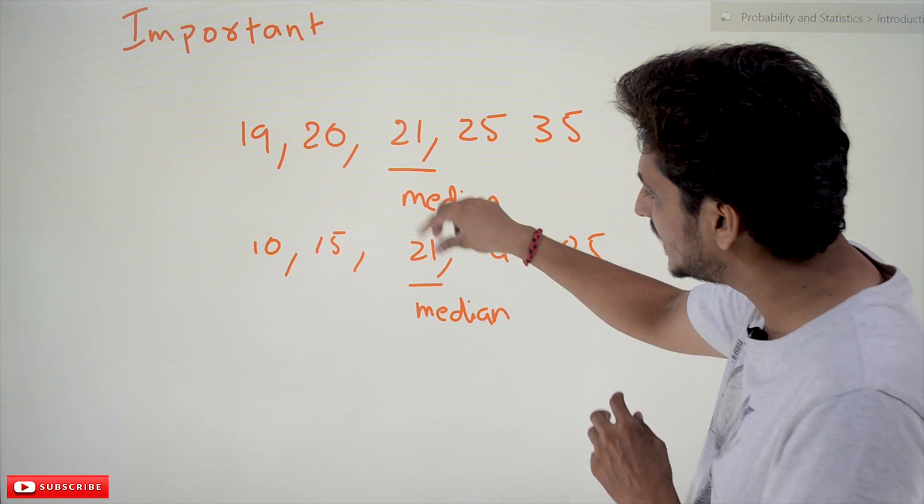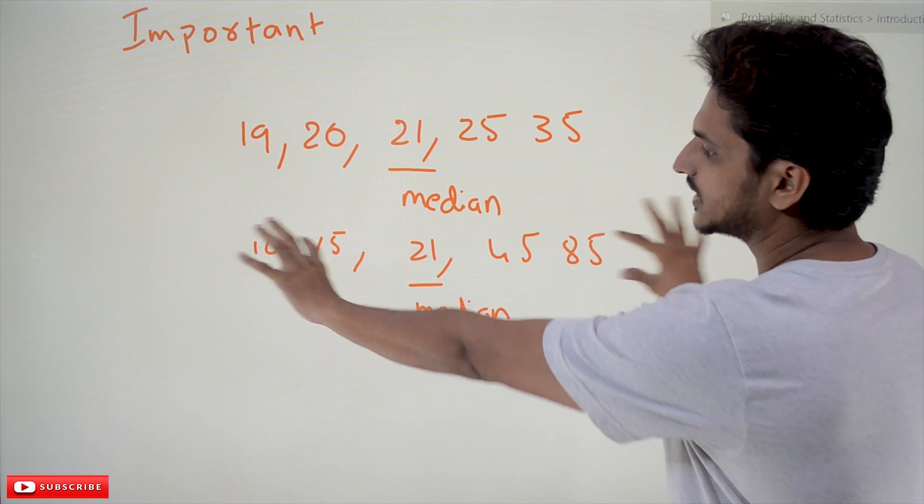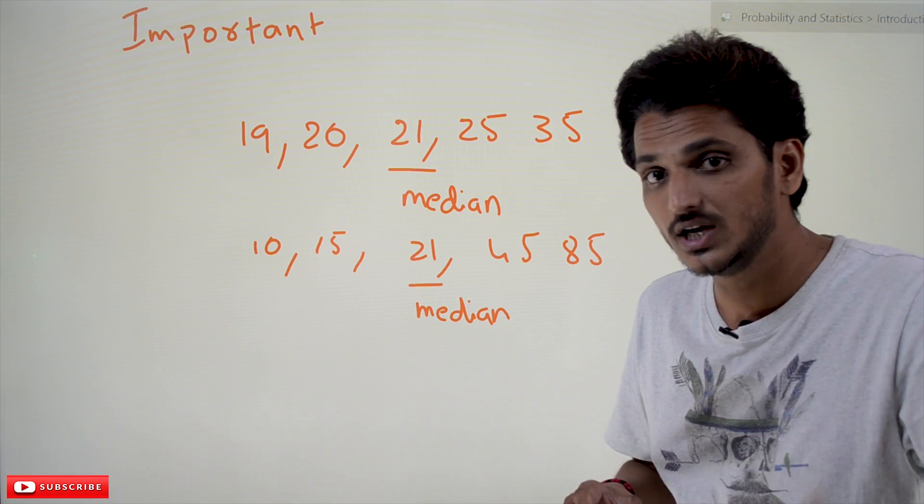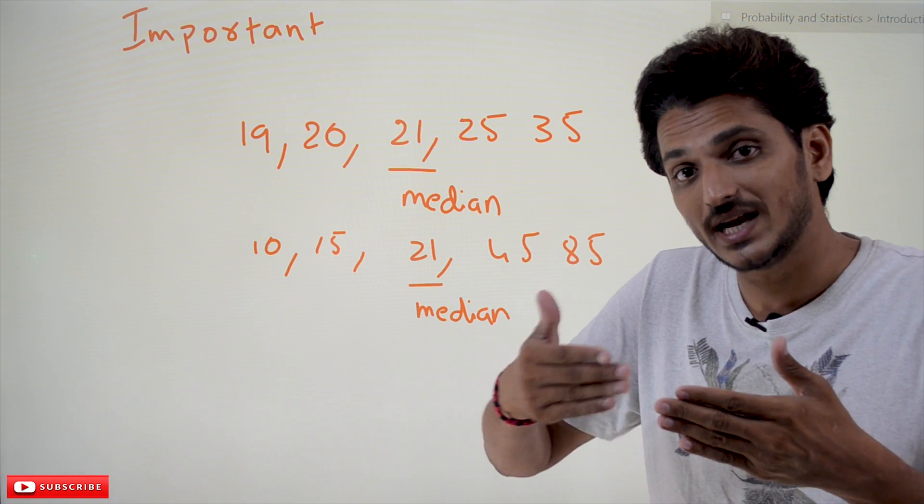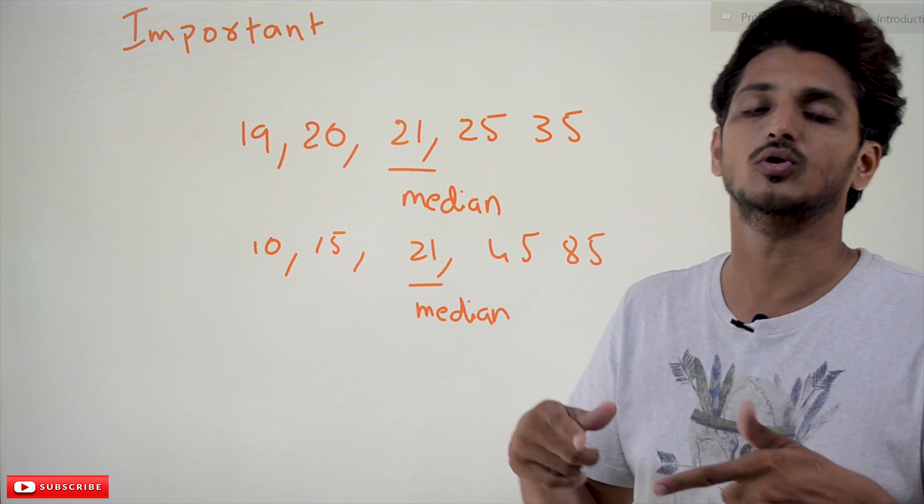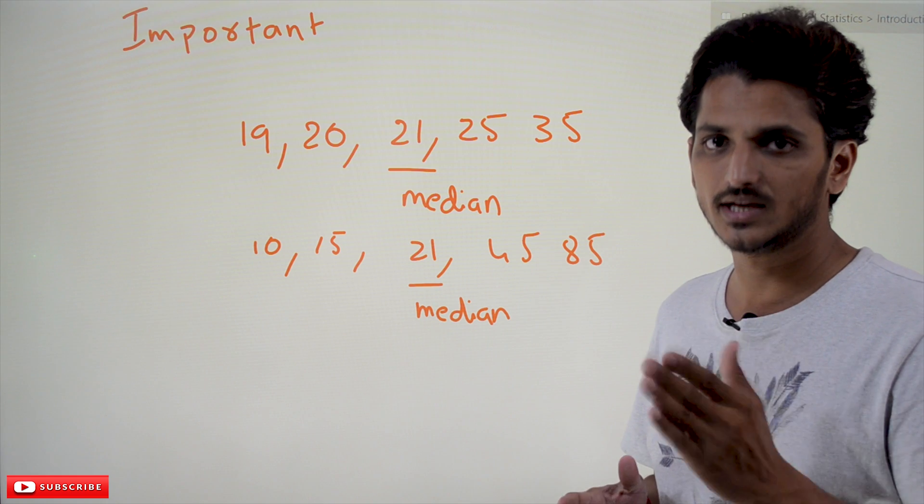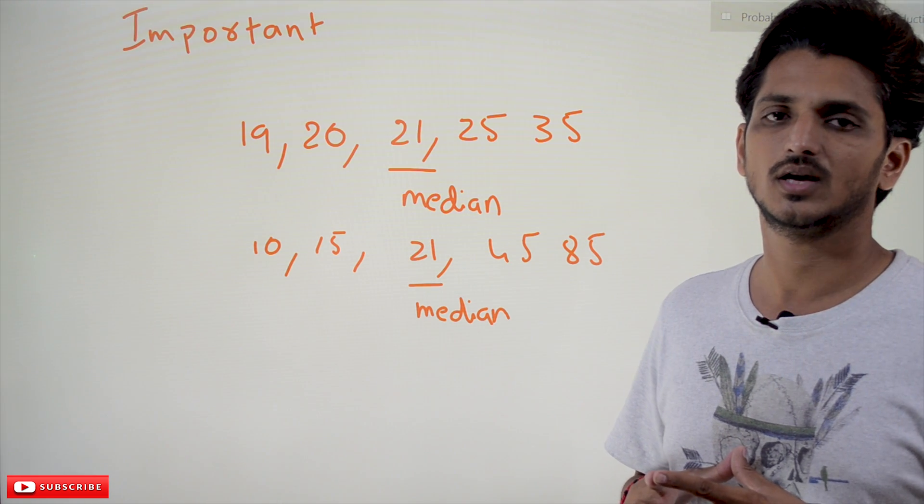We changed the values but still the median value is 21. It is not getting affected with the other numbers. But in your application, if you need the central tendency value to be affected based on the remaining values also, then median is not the best practice to take as a central tendency. This is an important point you have to understand.